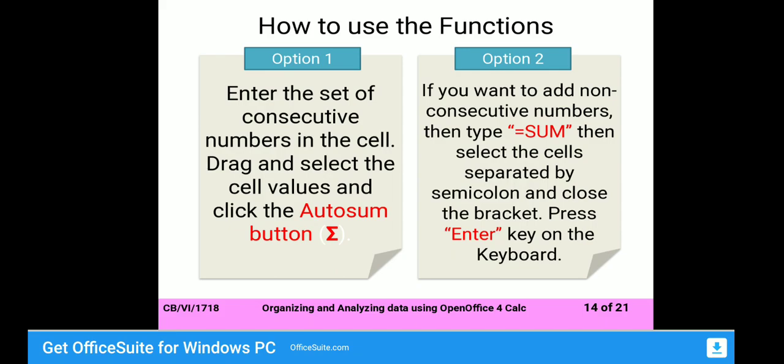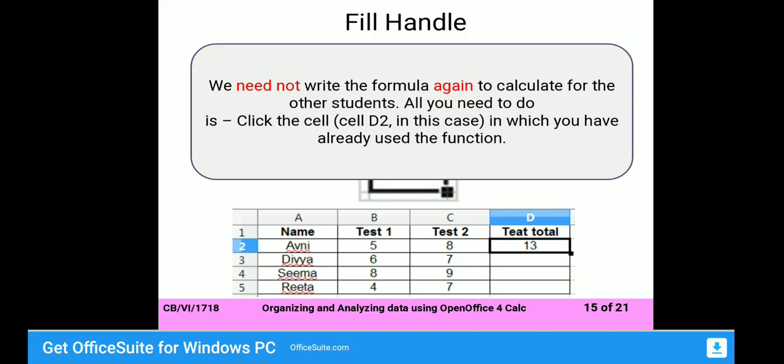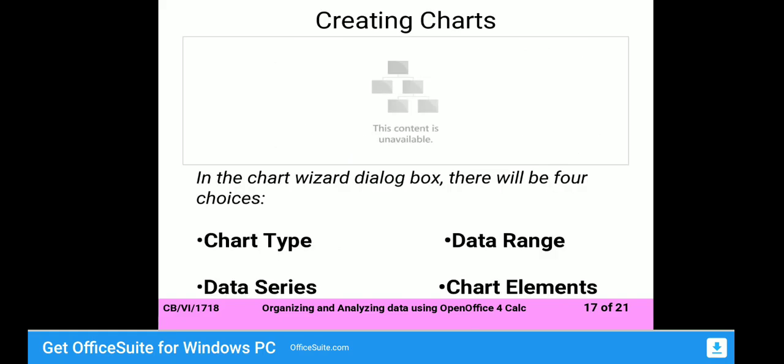There are two ways to use these functions. Option one: enter the set of consecutive numbers in the cells, drag to select the cell values, and click Auto Sum. Option two: select a cell, put the formula — for example, equals SUM, and in brackets give the range using a colon, like C1:C10. By these two options you can apply the statistical functions.